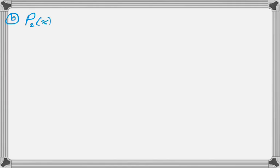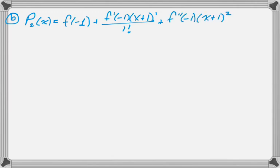The next question, Taylor polynomial, second degree polynomial, so I'm going to call that P₂. And I'm going to write out in general what that should be. That should be f(-1) plus f'(-1) times (x+1) over 1 factorial, plus f''(-1) times (x+1)² over 2 factorial.